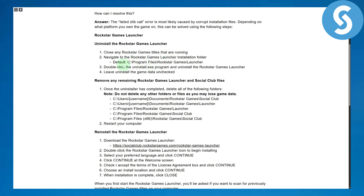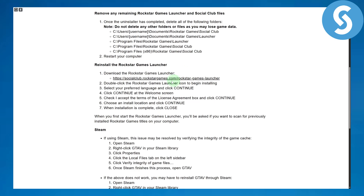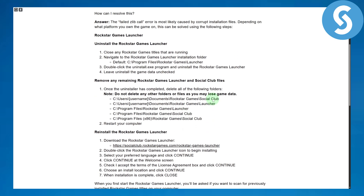Navigate to the Rockstar Game Launcher installation folder, and from there you are going to be selecting your Program Files, double-click and uninstall, leave the uninstall game data unchecked. Once you do that, it is going to be deleted. That is how you uninstall it. You can remove the remaining Rockstar Game Launchers and then you're going to be reinstalling it.